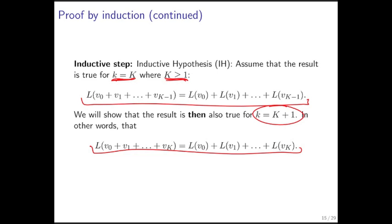This is called the inductive step. And the fact that you're assuming that it's true for k equals big K is called the inductive hypothesis for which we use the shorthand IH.